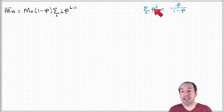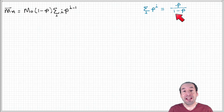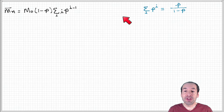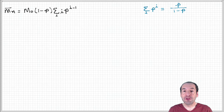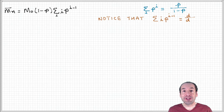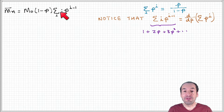A different summation — the sum of p to the i — can be expressed as the ratio p over one minus p. That's a useful result, but it doesn't help us directly because it's not exactly the summation that appears in our molecular weight expression. However, it's still an important result because we can use it to get an expression for the term we actually want.